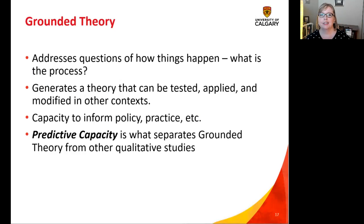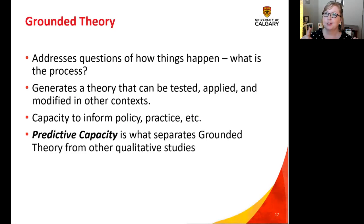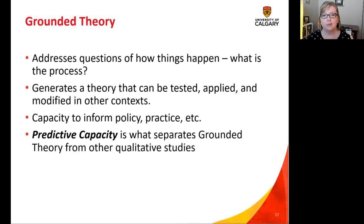The thing that separates grounded theory from other methods is predictive capacity — that is the golden nugget of grounded theory research. Predictive capacity means that if I know what you are experiencing now, I could possibly predict how the rest of your experience may go. Because of that, I can then intervene to try and improve that experience. Grounded theory can be a very powerful tool, especially in health service research, to ask: how can we make this process happen more smoothly or in a more positive way?